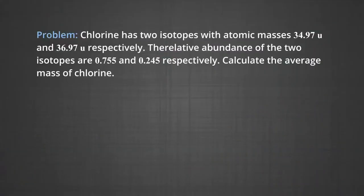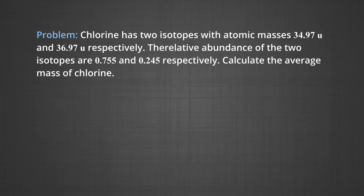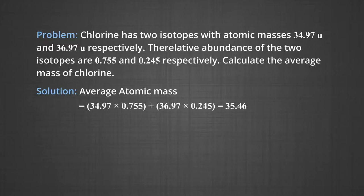We have a problem here. Chlorine has two isotopes with atomic masses 34.97u and 36.97u respectively. The relative abundance of the two isotopes are 0.755 and 0.245 respectively. We have to calculate the average mass of chlorine. The solution: average atomic mass = (34.97 × 0.755) + (36.97 × 0.245), which equals 35.46u.